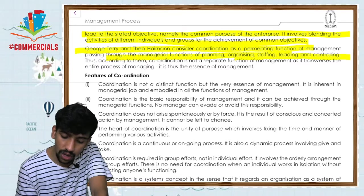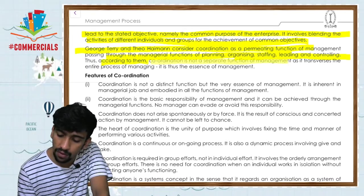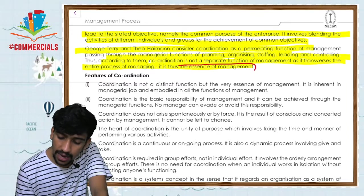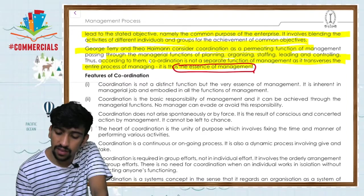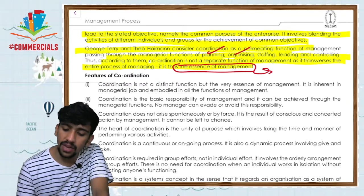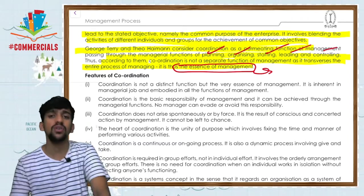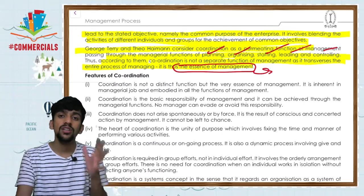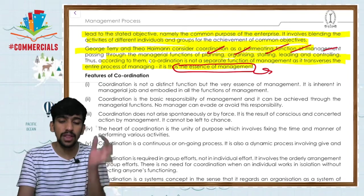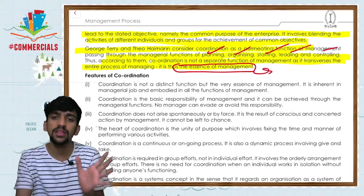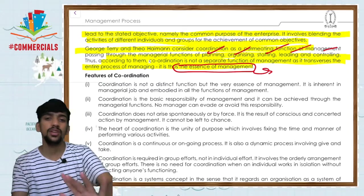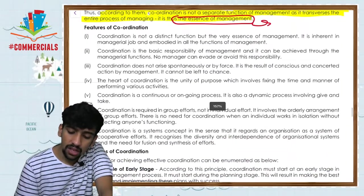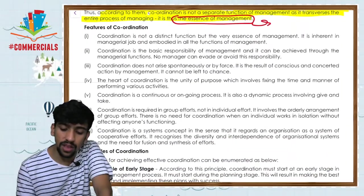Coordination is not a separate function from controlling — the entire process is the essence of management. This is the most important line. Why? Because whether you are doing planning, organizing, staffing, leading, or controlling, coordination is required everywhere. That is why it is called the essence of management.